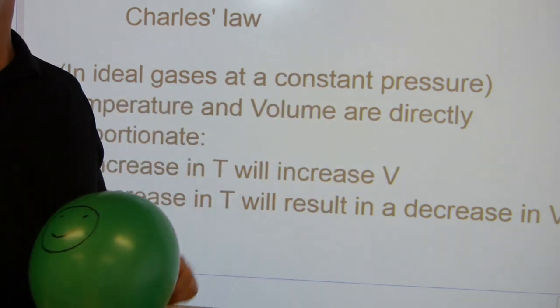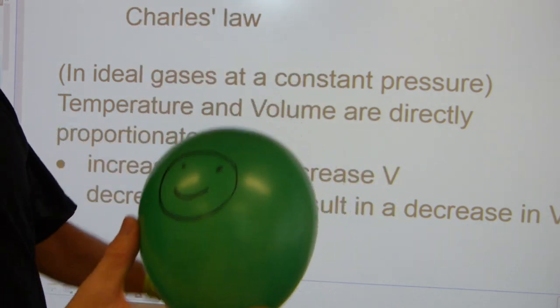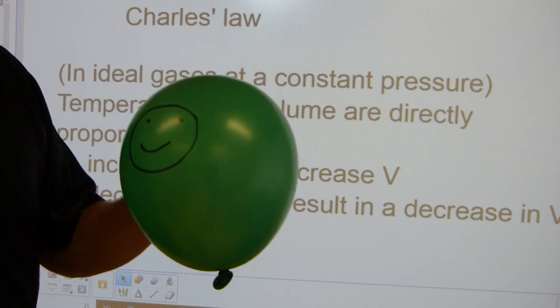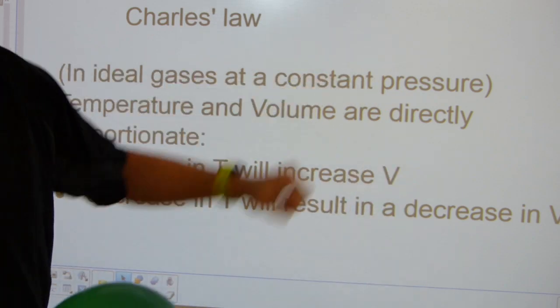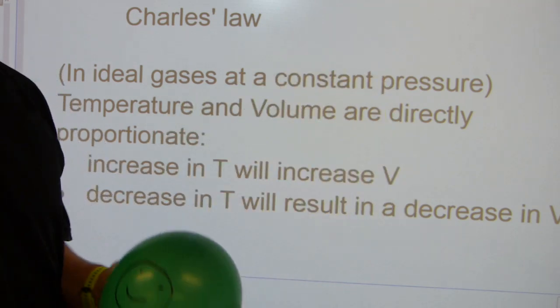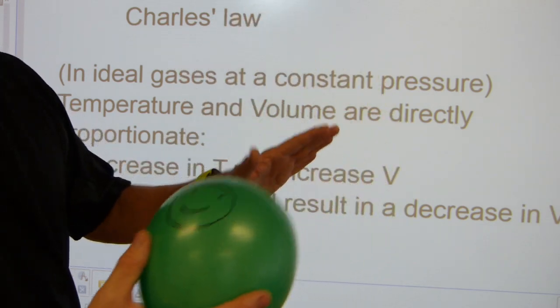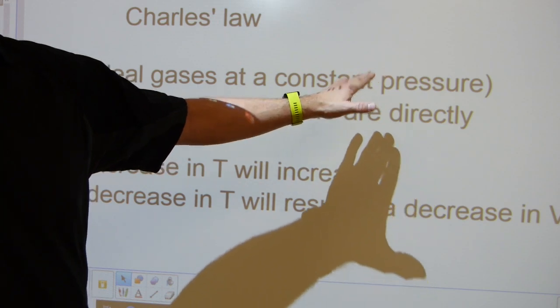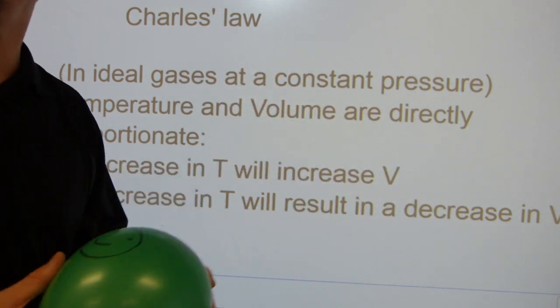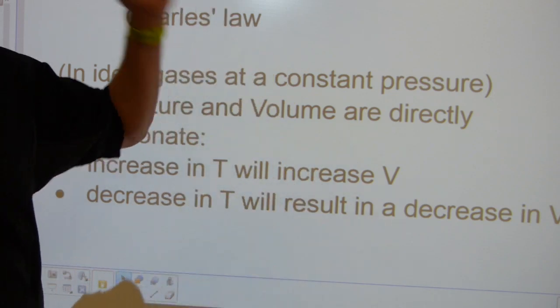And this works at a constant pressure, so this can be at sea level or at whatever altitude, atop a mountain, at any pressure, but it's constant, meaning balloon one and balloon two will have the same identical pressure for comparison. This gas can be enclosed in a rigid-walled cylinder, but it should be enclosed in a way that the pressure doesn't change.